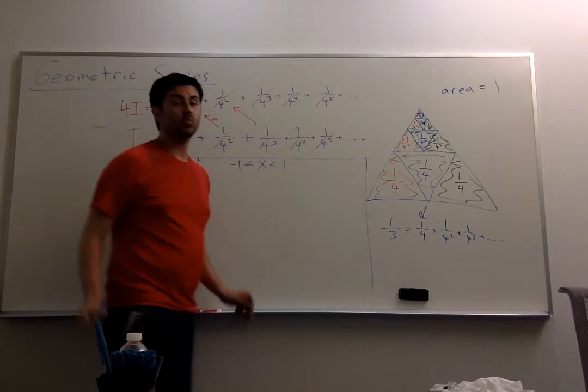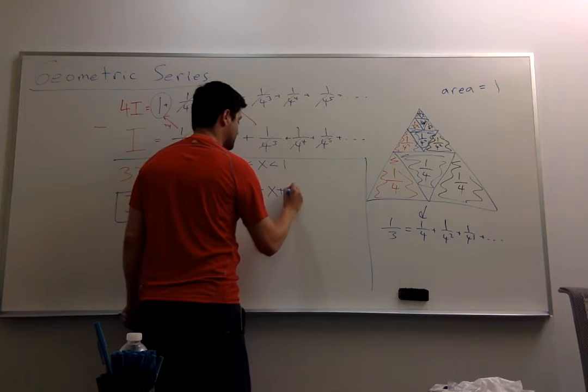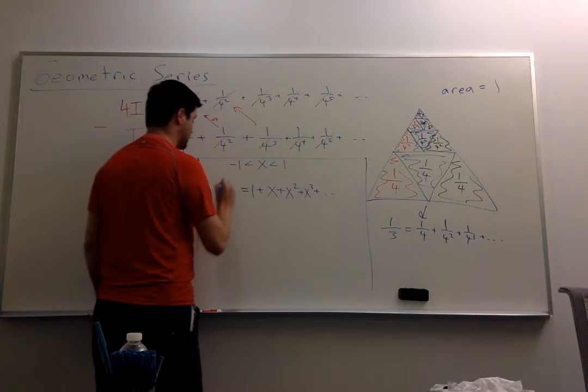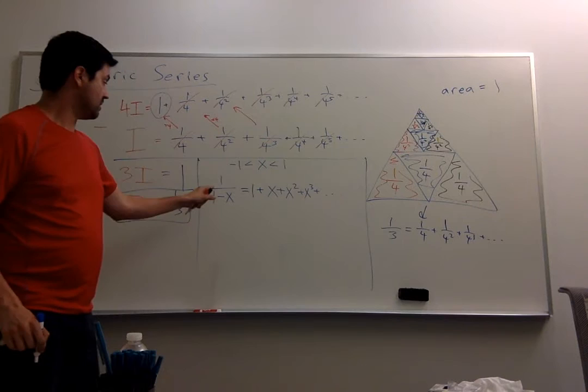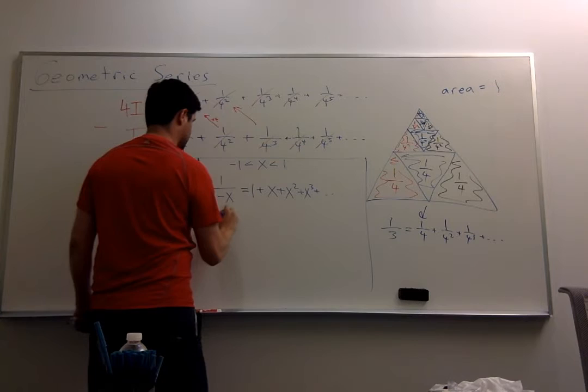this sum, 1 plus x plus x squared plus x cubed, going on forever, happens to be 1 over 1 minus x. The way to prove this, as an exercise, is to do the same thing, but using x instead of 1 quarter.